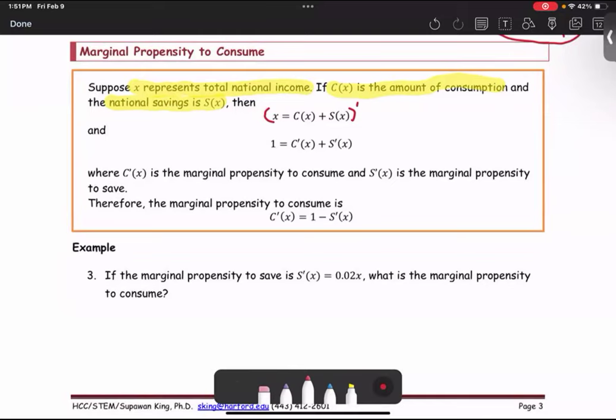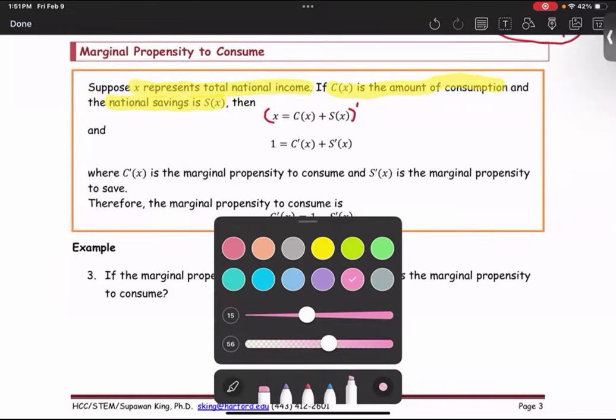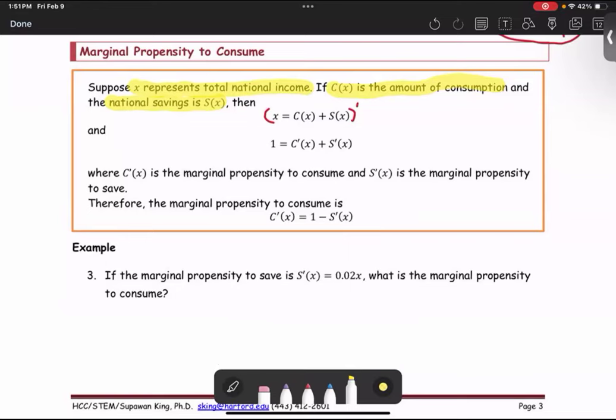The derivative of C is C prime, and the derivative of S is S prime. So we derive another function showing the relationship: the rate of change of the consumption plus the rate of change of the savings equals 1.